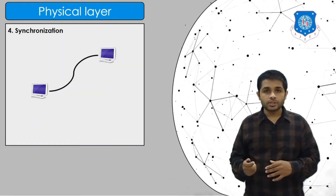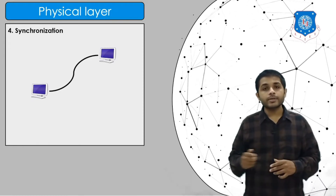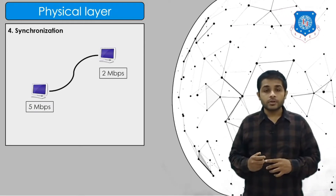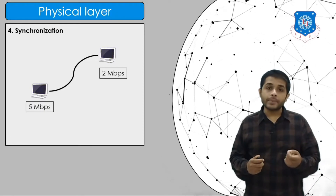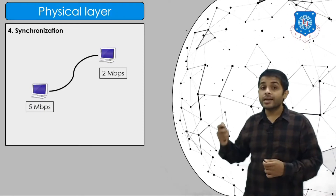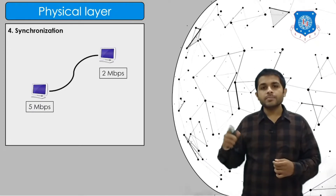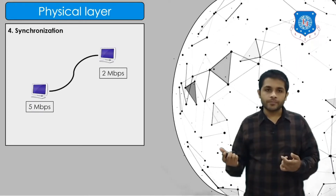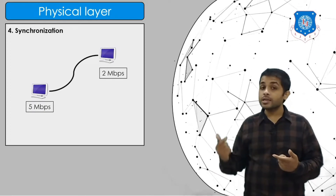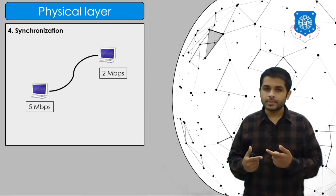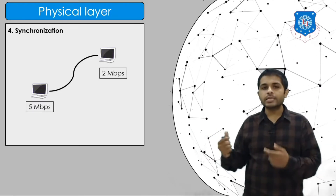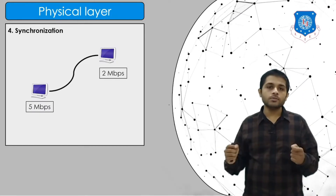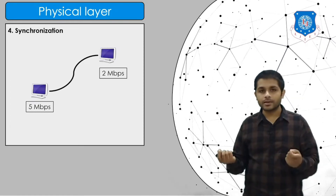Synchronization: as you can see in the figure, two devices are connected via a link but have different data rates — one device is sending data at 5 Mbps but the receiver is receiving data at only 2 Mbps. When there is a mismatch in data rates, data can be lost because the sender is sending faster than the receiver can handle. Synchronization means that two devices should be working on the same frequency and the same data rate.